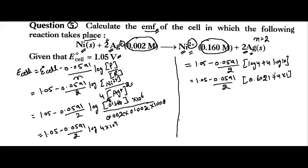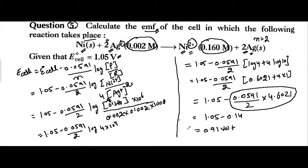Now we will proceed forward and calculate. When we do the calculation, the value comes out to be 1.05 minus 0.14, which equals approximately 0.91 volt. This is the value of E_cell.